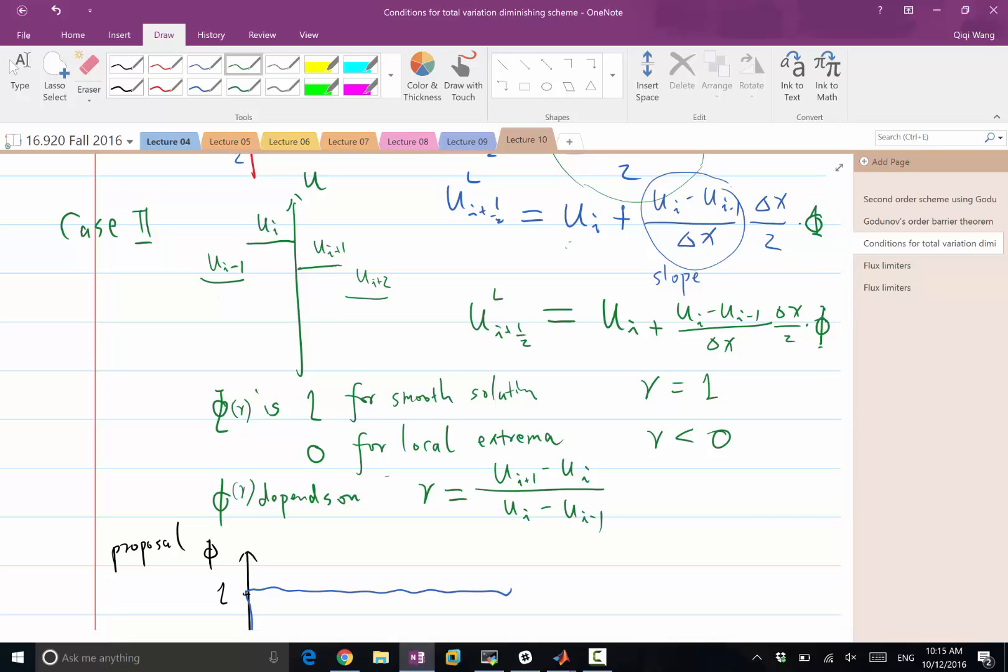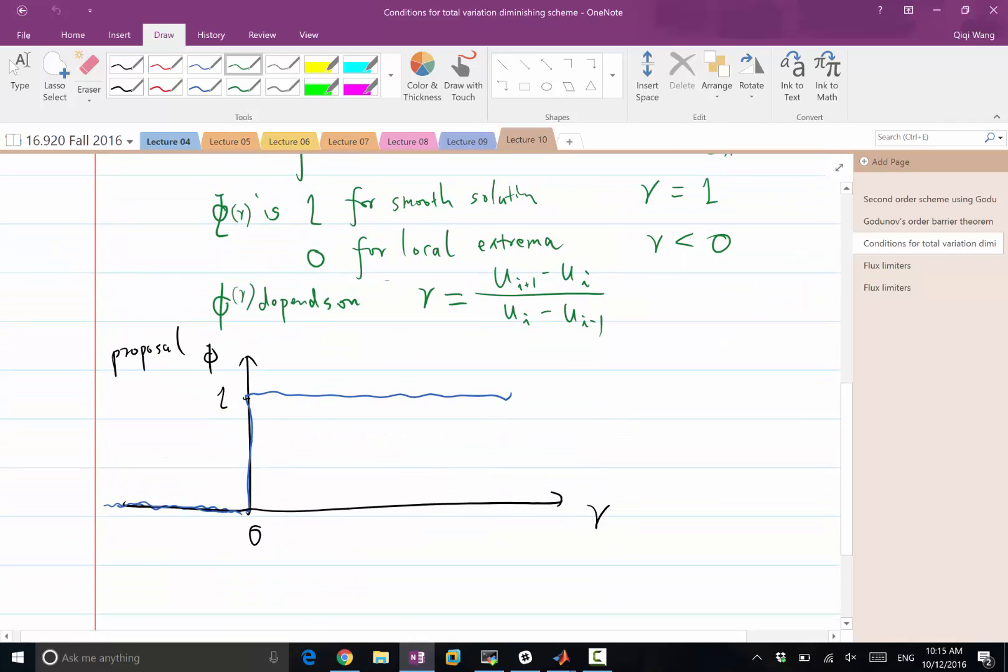Okay. So let's first figure out the left side of this proposal works. The proposal is phi should be just equal to 0 whenever R is less than 0. Does that give us the desired solution whenever we have a local extrema? Yes. Right? Whenever we have a local extrema, we want a piecewise constant reconstruction because any slope is going to give us new extremas. Any non-zero slope is going to make the reconstructed solution go higher or lower than the existing extrema. So this part of the proposal is correct. So phi of R should be exactly equal to 0 whenever R is less than 0.